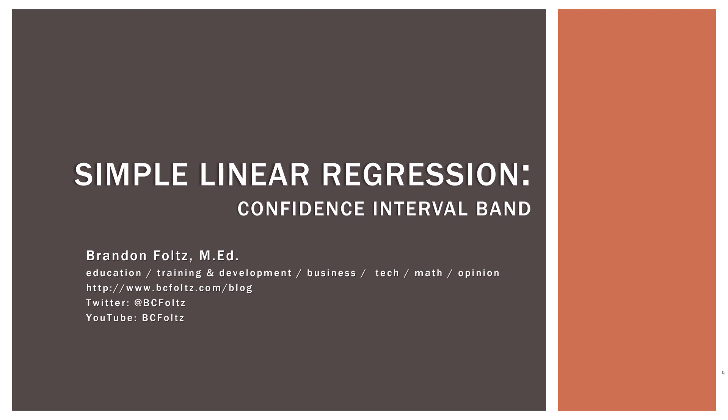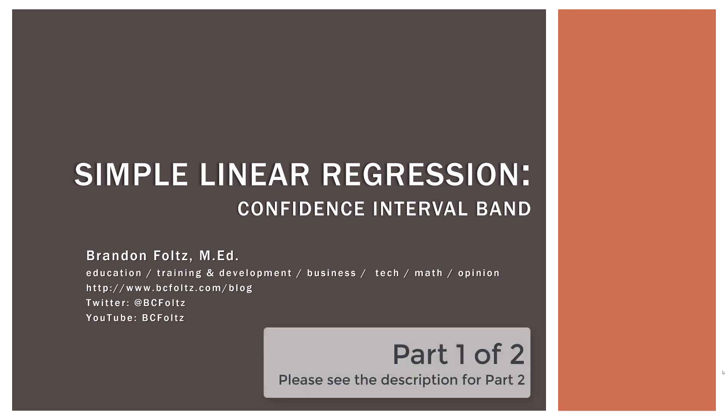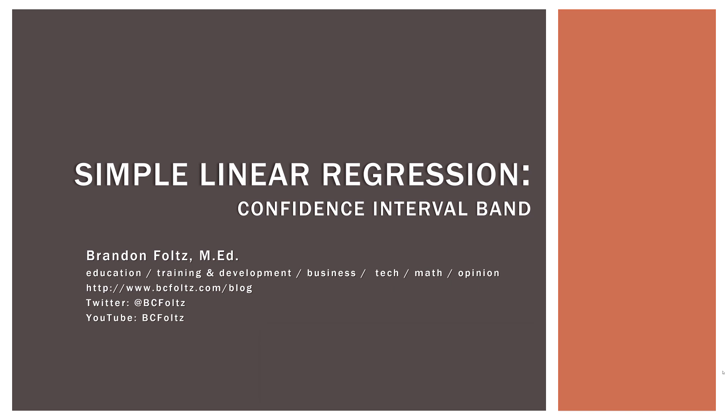This video is the next in our series on simple linear regression, and specifically it is about confidence interval bands. You've probably seen these at some point, but you may not be quite sure what it means or where it comes from. What we're going to try to do is explain what those are, demystify them a bit, tell you what it means, and actually how you can calculate them, because it's not too bad in simple linear regression.